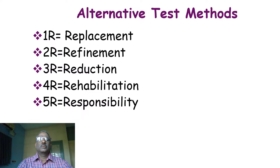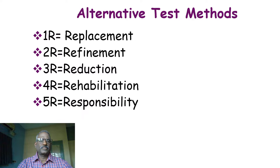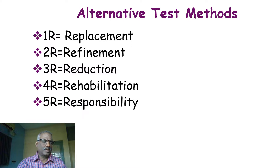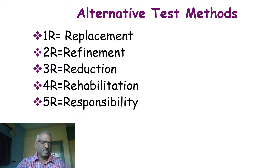These alternative test methods include the five R concept. The first R is replacement, the second R is refinement, the third R is reduction, the fourth R is rehabilitation, and the fifth R is our responsibility. In replacement alternatives, we exchange and use information about animal experiments which have already been carried out — that means we can utilize information from previously conducted experiments.